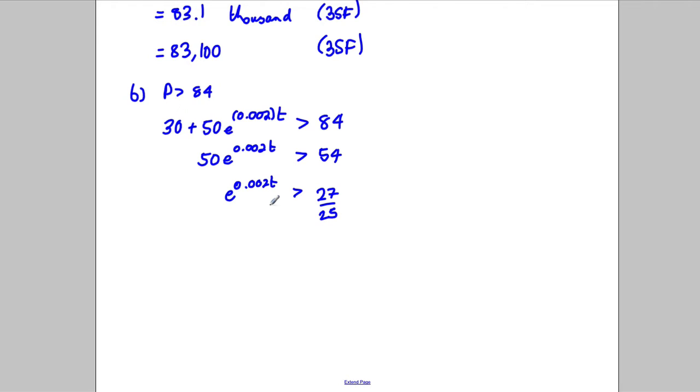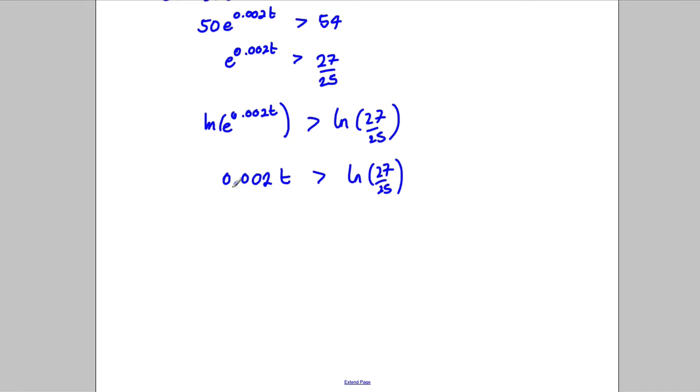So 27 over 25, and then I take logarithms of both sides. So if I take logarithms of both sides, I can do that, and this side I can therefore write as 0.002 T is bigger than or equal to whatever this answer is here, so the natural logarithm of 27 over 25. Don't do it until the last line. Divide both sides by the 0.002, so T is certainly bigger than 1 divided by 0.002, the natural logarithm of 27 over 25, like that.